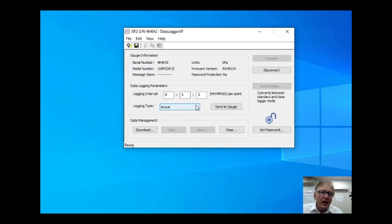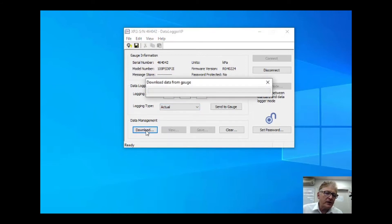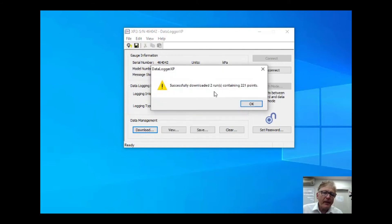It gives the serial number, etc. And the fact is that we can reprogram the logger, the logging, etc. We can send that to the gauge. In this instance, I'm just simply going to download. So I'm going to click on download. Successfully downloaded both runs.